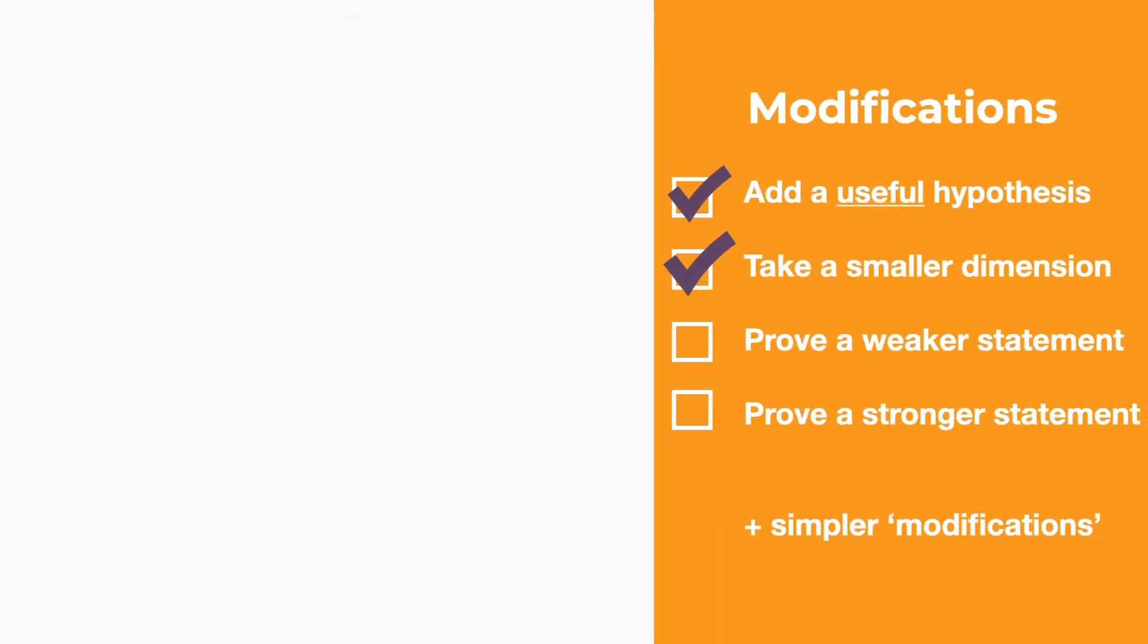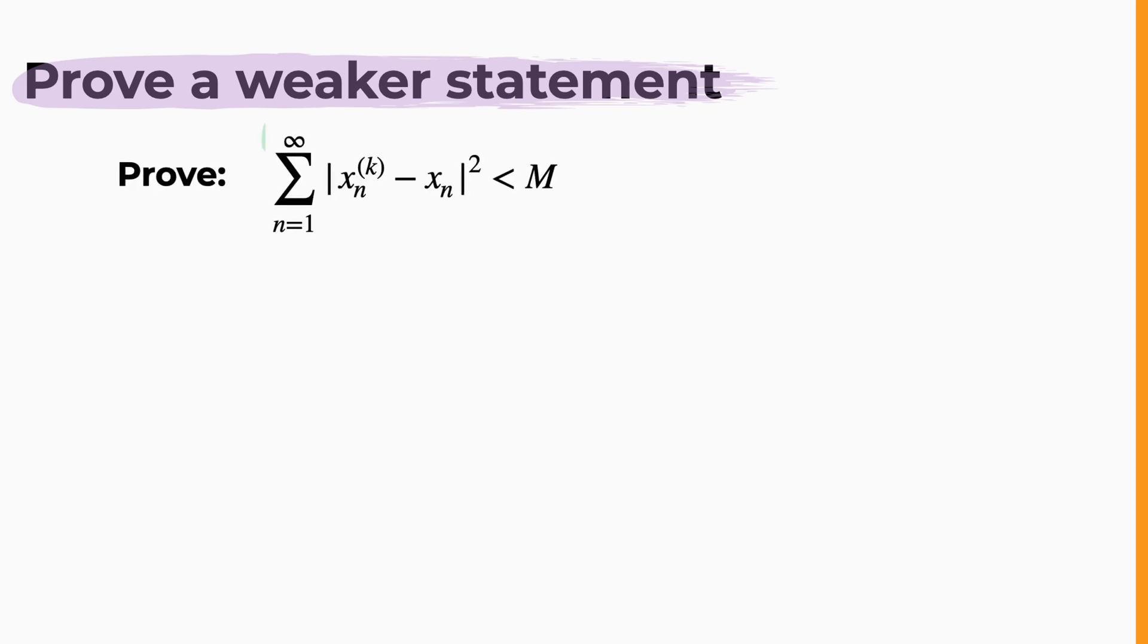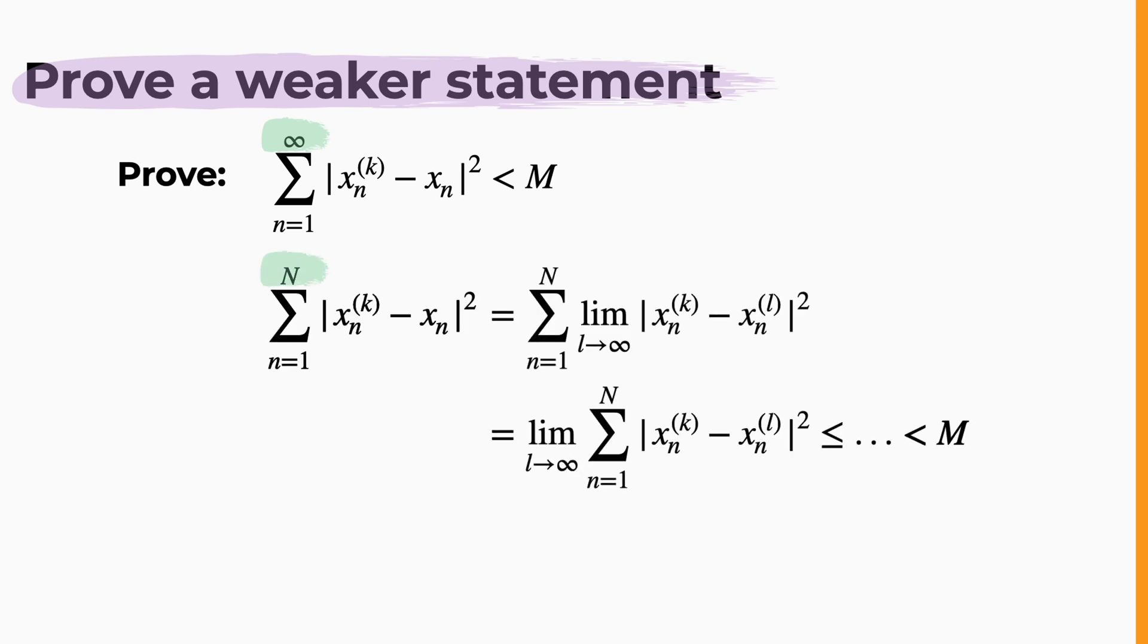Next, we have another modification that can simplify things, and that is to prove a weaker statement. This happens a lot in real analysis. For example, if you need to prove something about an infinite sum and you're stuck, try proving for a finite one first, where it's simpler to use tools like swapping limits and sums.